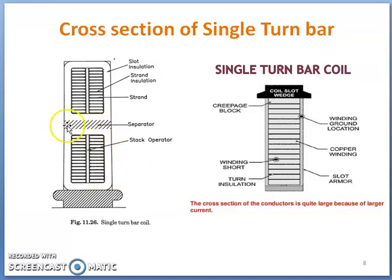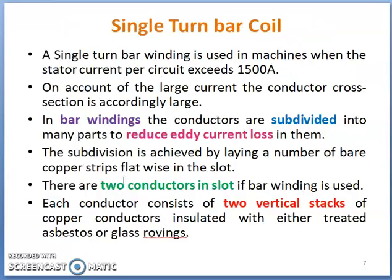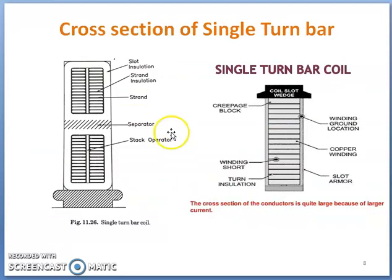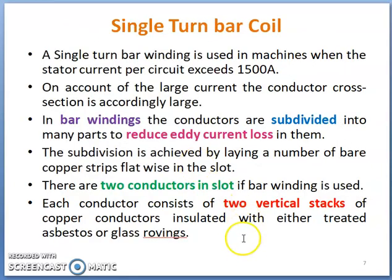A separator is placed between the vertically arranged stacks, along with the main insulation. In case of bar winding, two conductors are put in the slot, subdivided into many parts to reduce eddy current loss. Each vertical stack — there are two vertical stacks — of copper conductors is insulated with asbestos or glass rovings.